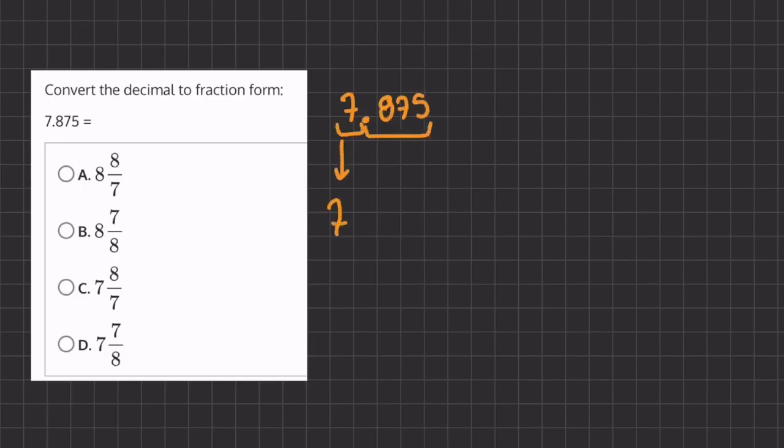And now let's see what this decimal is going to look like as a fraction. So let's take 875. We know that this 8 is part of the 10th place, this 7 is part of the 100th place, and this 5 is part of the 1000th place. Meaning that we can write this decimal as 875 all over 1000.